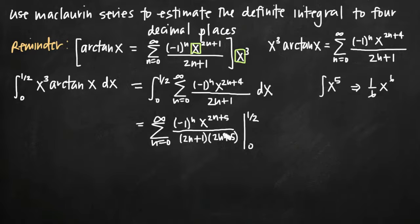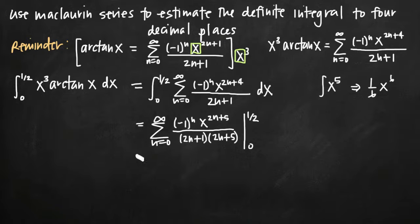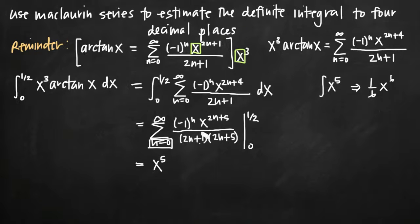We're going to plug in n equals 0, 1, 2, 3 to get the first several terms of this series, then evaluate on the interval 0 to 1/2. Plugging in n equals 0: negative 1 to the 0 power is just 1, and x to the 2 times 0 plus 5 is x to the 5th. We get x to the 5th divided by 1 times 5.